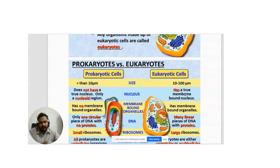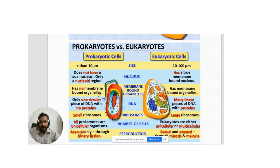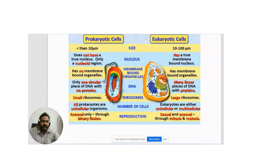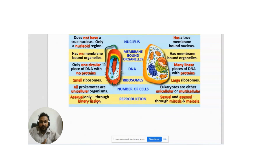Prokaryotes have a nucleoid region rather than a true nucleus, and no membrane-bound organelles. Eukaryotes have membrane-bound organelles and a membrane-bound nucleus. Prokaryotes have one circular piece of DNA with no protein, while eukaryotes have many linear pieces of DNA with proteins. Prokaryotes have small ribosomes; eukaryotes have large ribosomes. All prokaryotes are unicellular; eukaryotes can be unicellular or multicellular. Prokaryotes reproduce asexually only via binary fission; eukaryotes reproduce sexually and asexually through mitosis and meiosis.